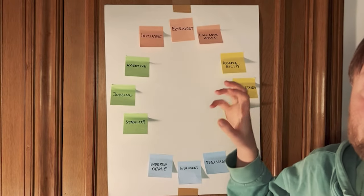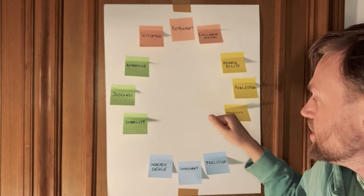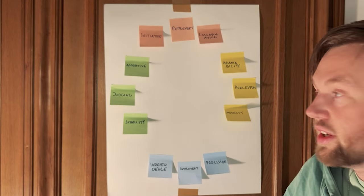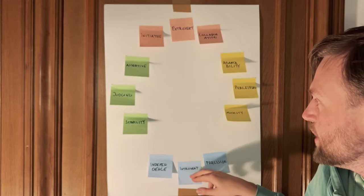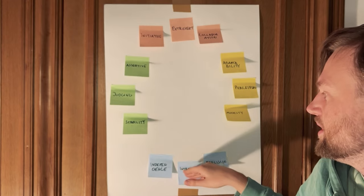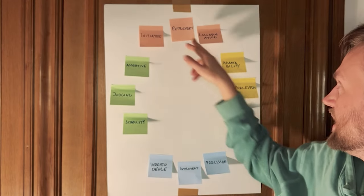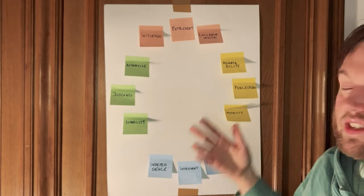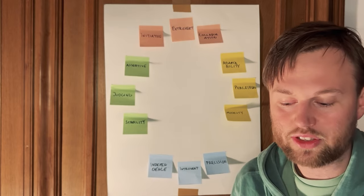These are the eight general traits for introverts, extroverts, judgers, and perceivers. There are overlaps between all these traits — introversion and judging both have stability in their stack, while perceiving and extroversion both share collaboration as a normally found personality trait.